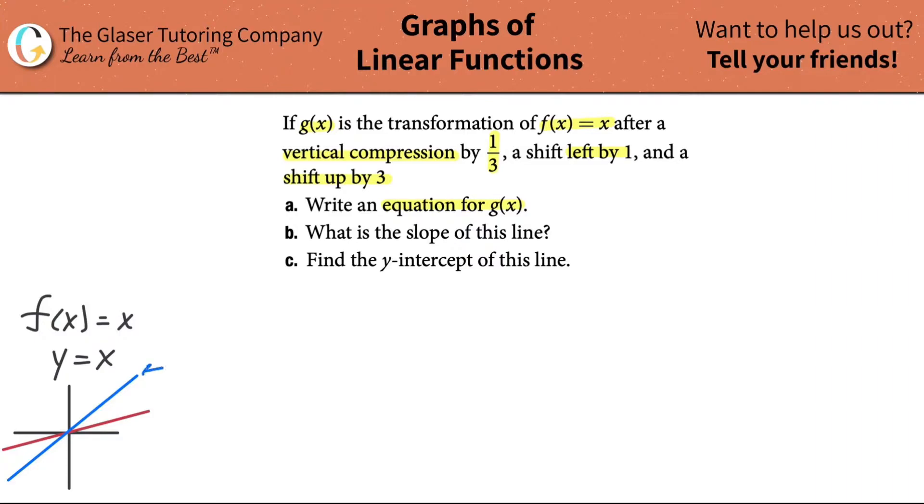If you knew that the original slope of this line was one - how do we know that? What's the coefficient in front of x? It's one, right? So the question then is, if I had to essentially rotate the blue line to make it look like the red line, how much is the slope decreasing to? It's decreasing to one-third of the original value because we're compressing it by one-third.